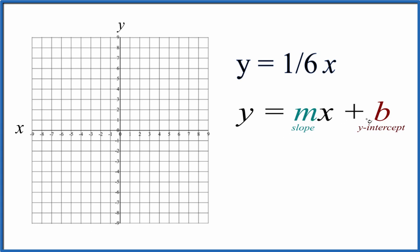In this case, we have y = mx + b, but there's no b here. All you have to do is say plus zero, and that's going to be the y-intercept. So we'll go to the y-axis here at zero. That's where the line for y = 1/6x is going to cross the y-axis.